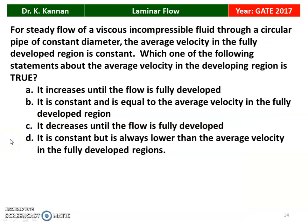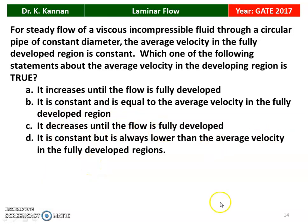Next question from the 2017 question paper: for steady flow of viscous incompressible fluid through a circular pipe of constant diameter, the average velocity in the fully developed region is constant. Which statement about average velocity in the developing region is true? The correct option is: it is constant and equal to the average velocity in the fully developed region.